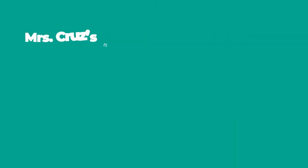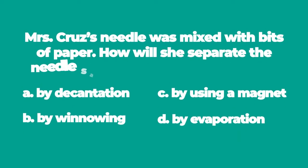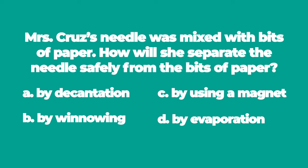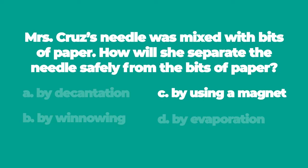And number 5: Mrs. Crew's needle was mixed with bits of paper. How will she separate the needle safely from the bits of paper? A. By decantation. B. By winnowing. C. By using a magnet. D. By evaporation. C. Mrs. Crew can separate the needle safely from the bits of paper by using a magnet.